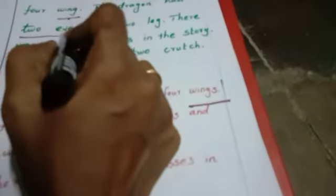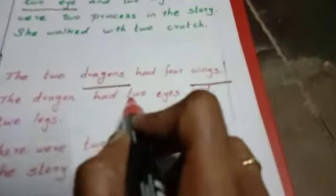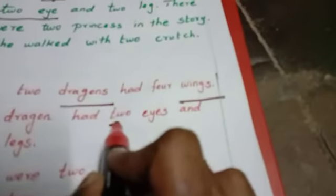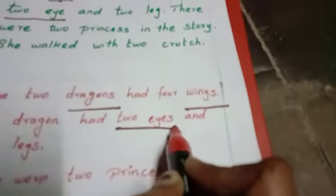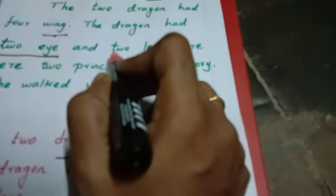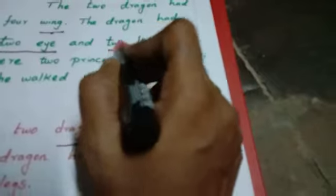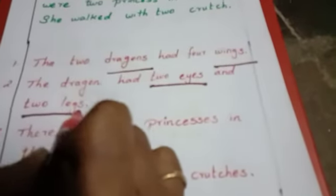Next, two eye — more than one, so two eyes. Two legs — more than one, so two legs.